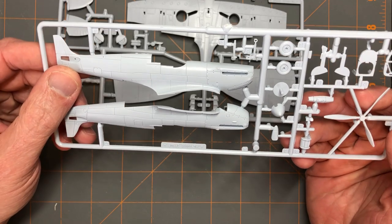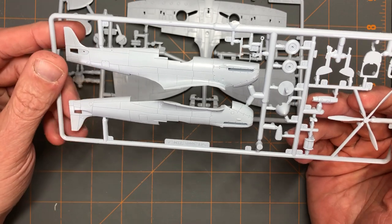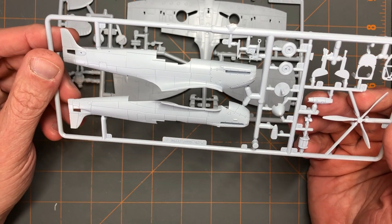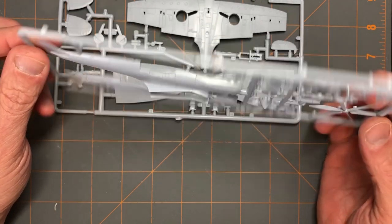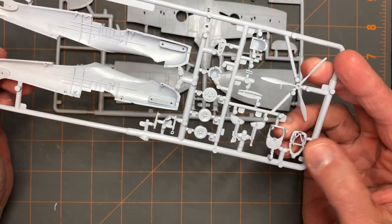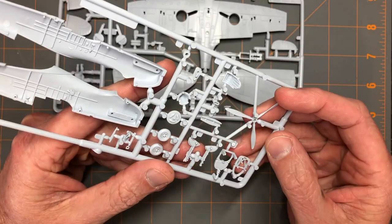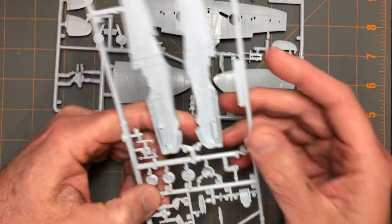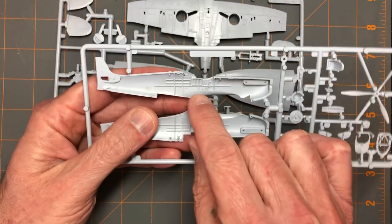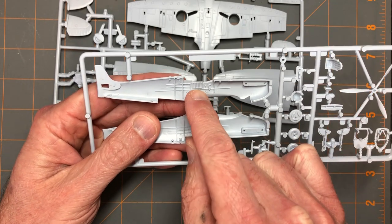We're going to get rolling on this 1/72nd scale Airfix Spitfire Mark I build. First steps I'm going to do is see what we can do with this cockpit. I'm going to rework the seat a little bit, add some seat belts maybe, and then I'm going to see if I can split the canopy. If I can, I'm going to separate this side door and lower it.